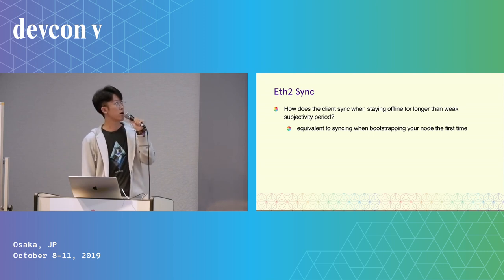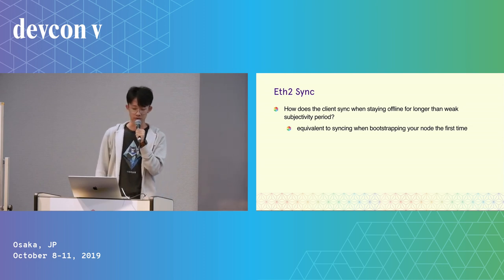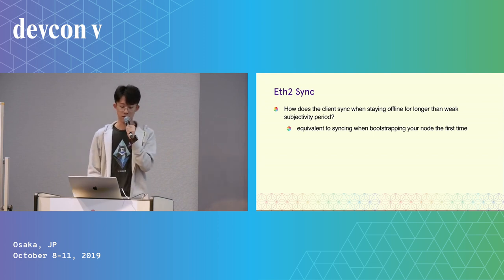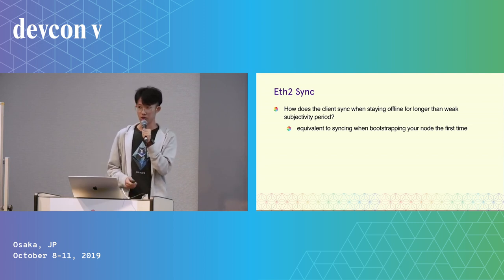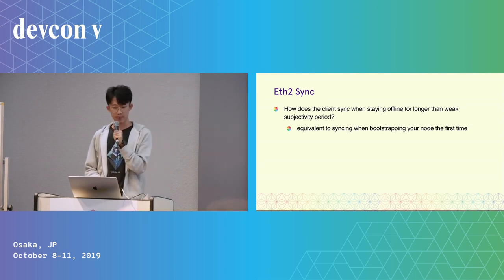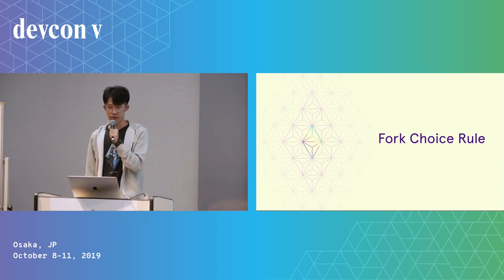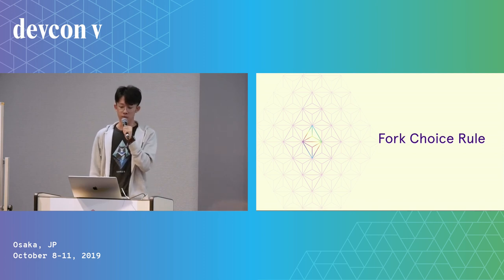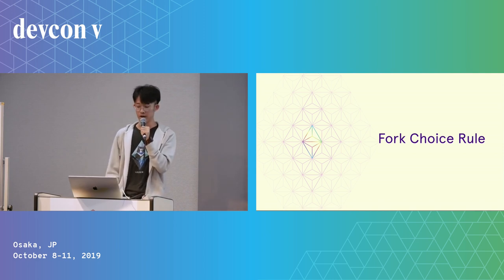Third situation: how does the client sync when you stay offline for longer than the weak subjectivity period? It's basically the same as syncing when you bootstrap the node for the first time — you trust the genesis block or the latest checkpoint and start syncing from there. Once syncing is finished, we have a picture of how the block tree looks, and then we apply the fork-choice rule to get a score for each chain and identify the canonical chain.